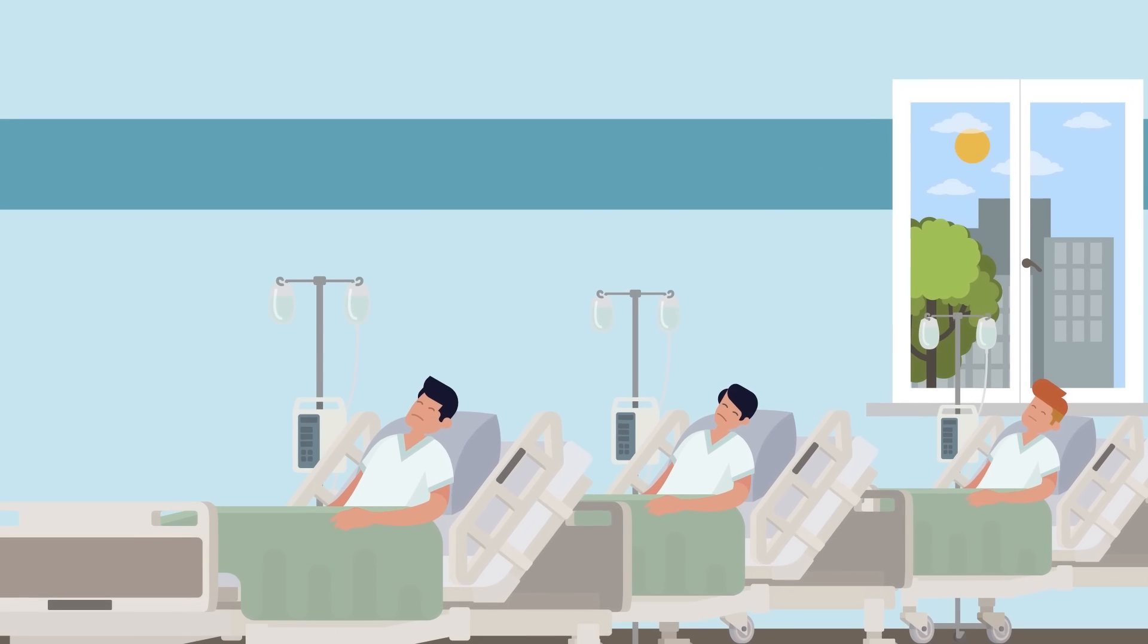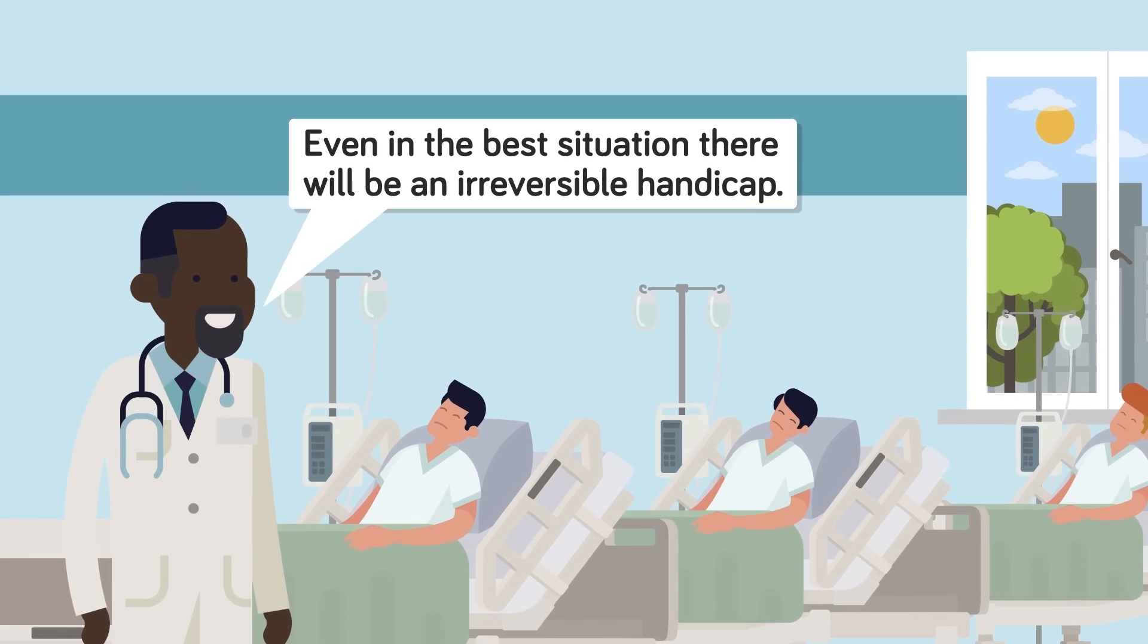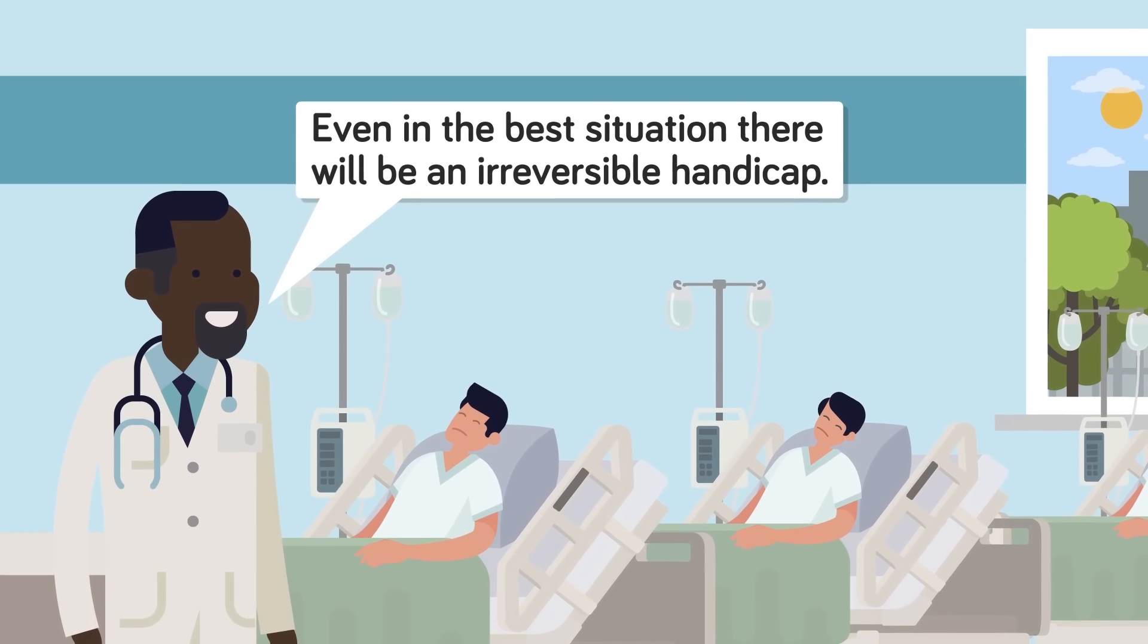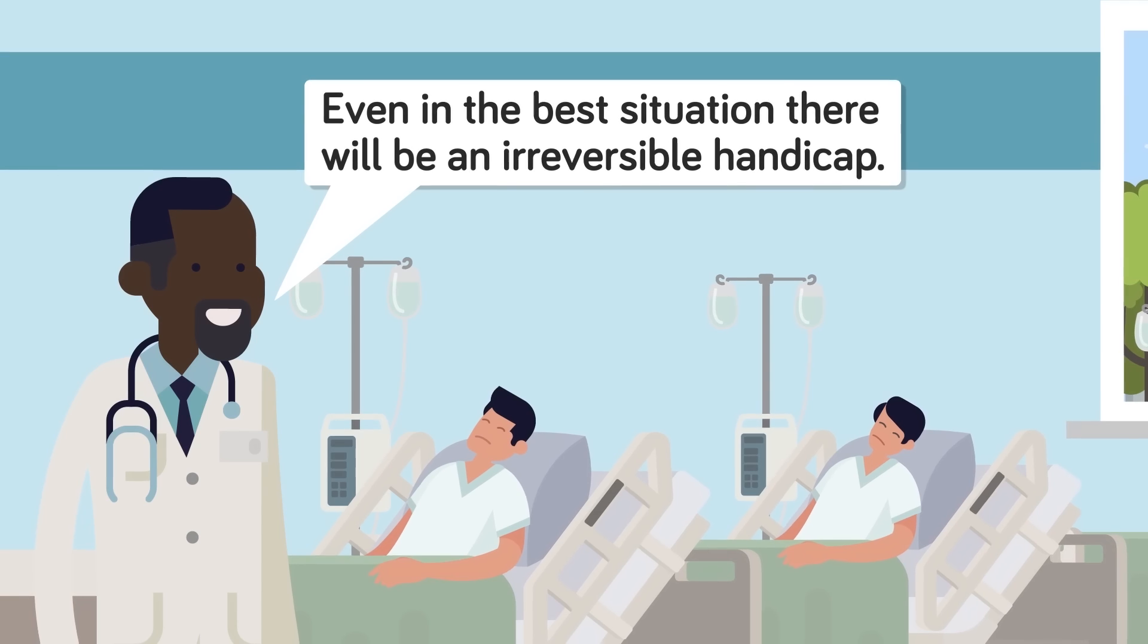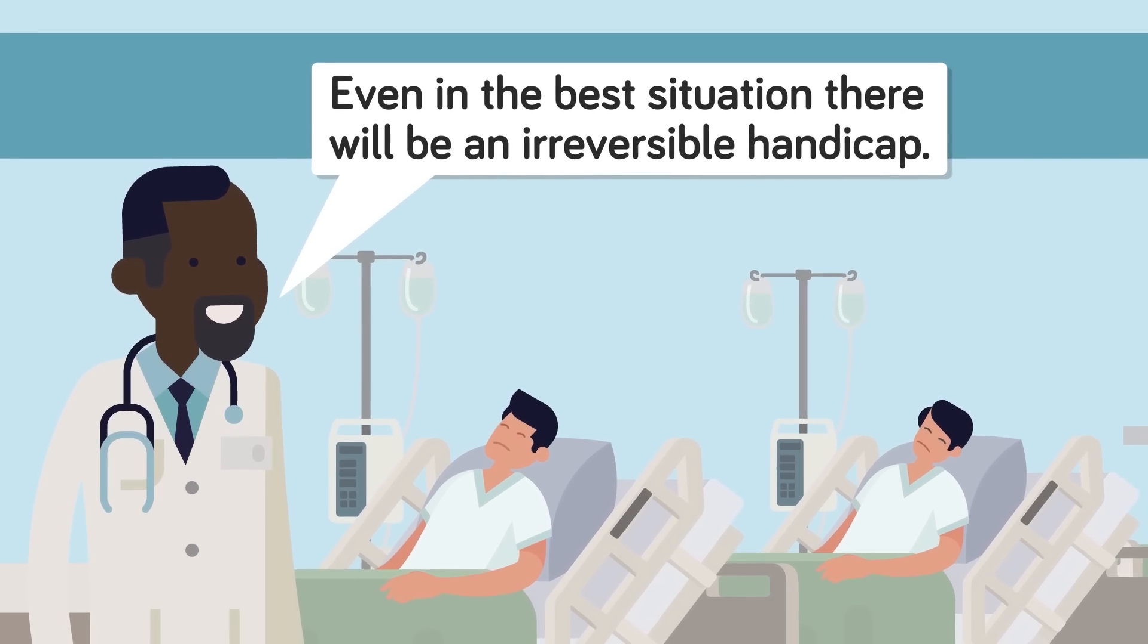As for three of the four others that were sick, a doctor later said that even in the best situation there will be an irreversible handicap. The payment was around $2200 for two weeks. An investigation later revealed that several monkeys had died during pre-human testing, but this information was not in the study protocol report.